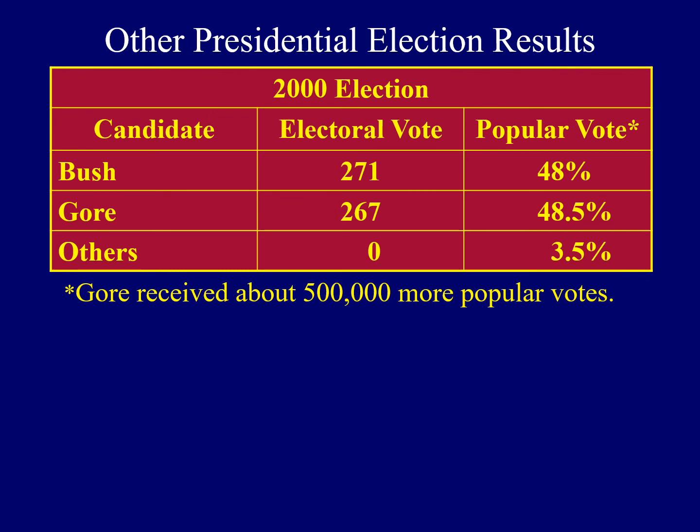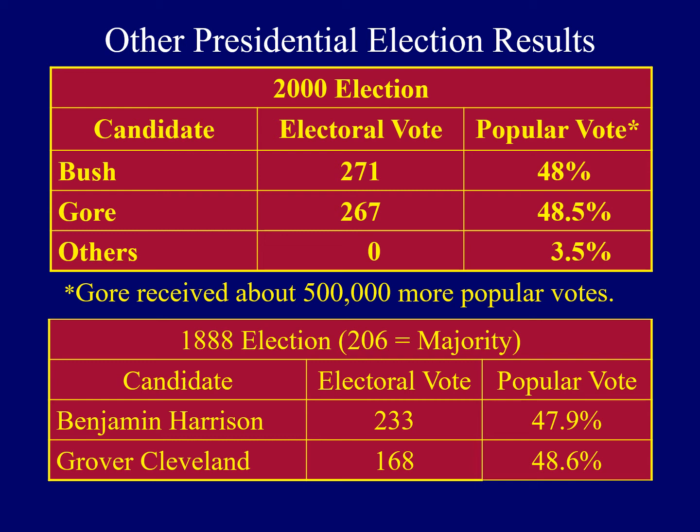This also happened in 1888. At that time there were fewer states, so a majority of electoral votes was 206. Benjamin Harrison clearly won a majority with 233, yet Grover Cleveland won the popular vote.